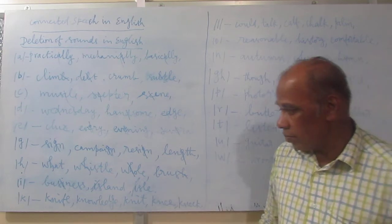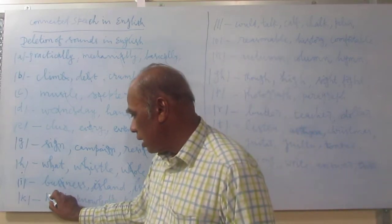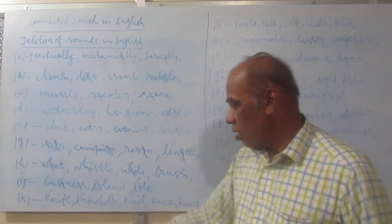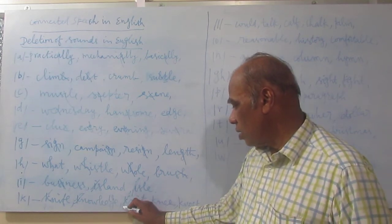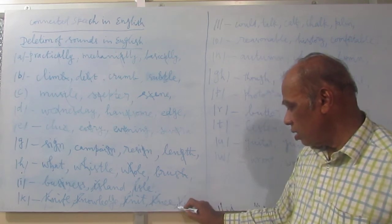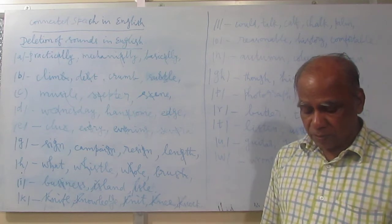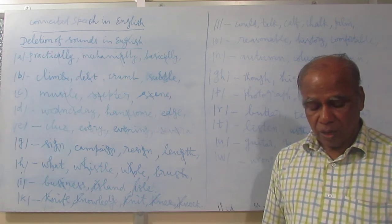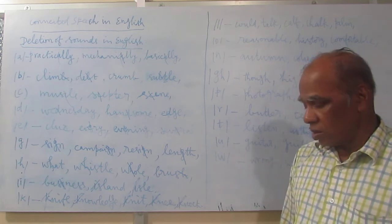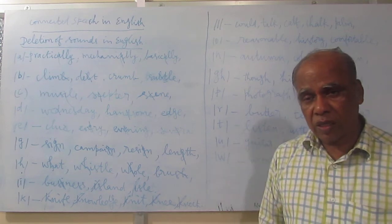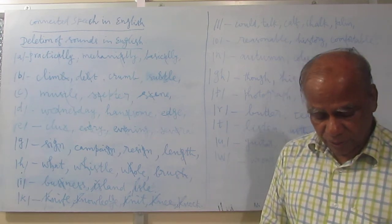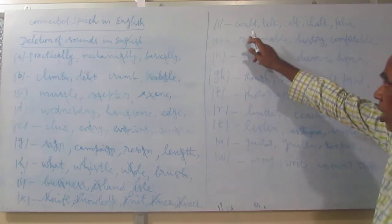Next, the 'k' sound is deleted. Knife — 'k' is deleted. Knowledge — 'k' is deleted. Knit, knee, knock, knuckle, knob, know (K-N-O-W), knot (K-N-O-T) — all these words begin with 'kn' but the 'k' sound is deleted.